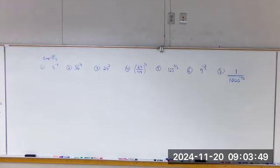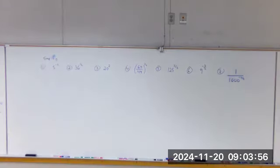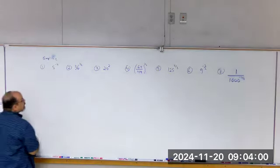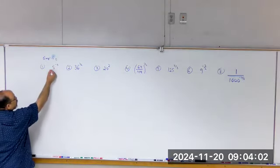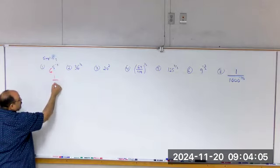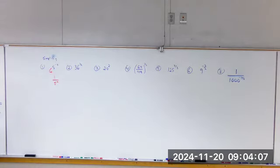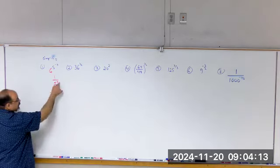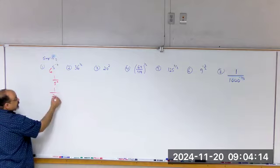Five to the negative two: that means we're going to do the reciprocal first. We rewrite this as one over five to the positive two, and that is one over twenty-five, because five squared is twenty-five.